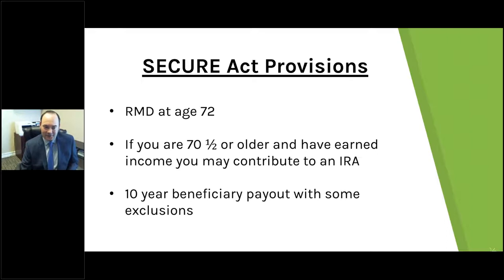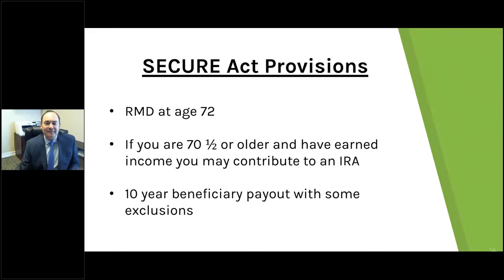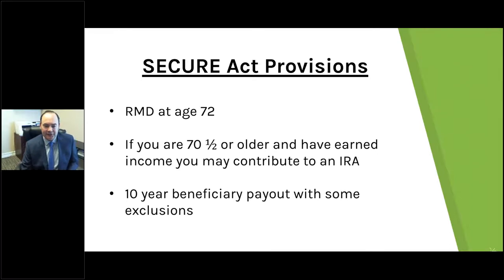Earlier this year, we had the SECURE Act passed — so much has happened since then that many have forgotten about it. It changed many things, including the age at which you must take your required minimum distribution. Under prior law, you had to start taking withdrawals from retirement accounts — IRAs, 401(k)s, 457s — at age 70½. That has been changed to age 72, except for this year. Also, under prior law once you reached 70½ you could no longer contribute to your IRAs. Under the SECURE Act, you can still add to your IRAs if you have earned income.